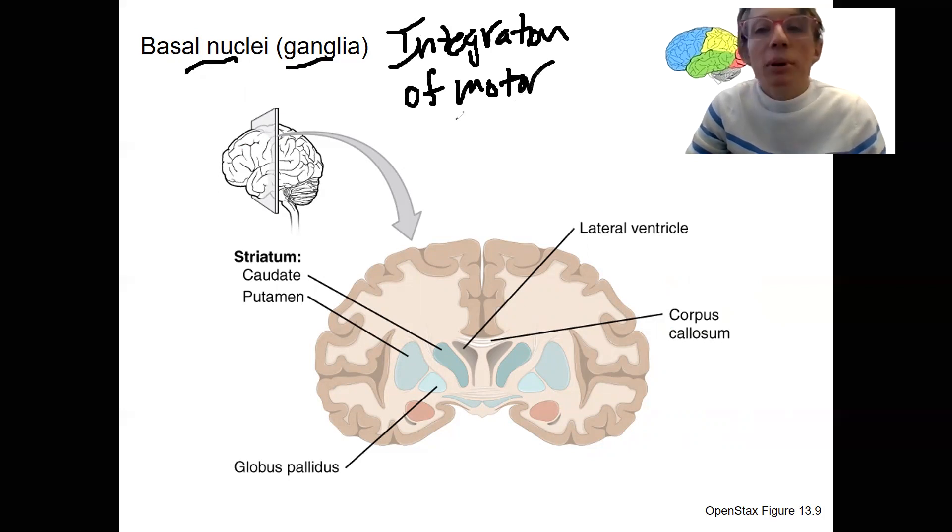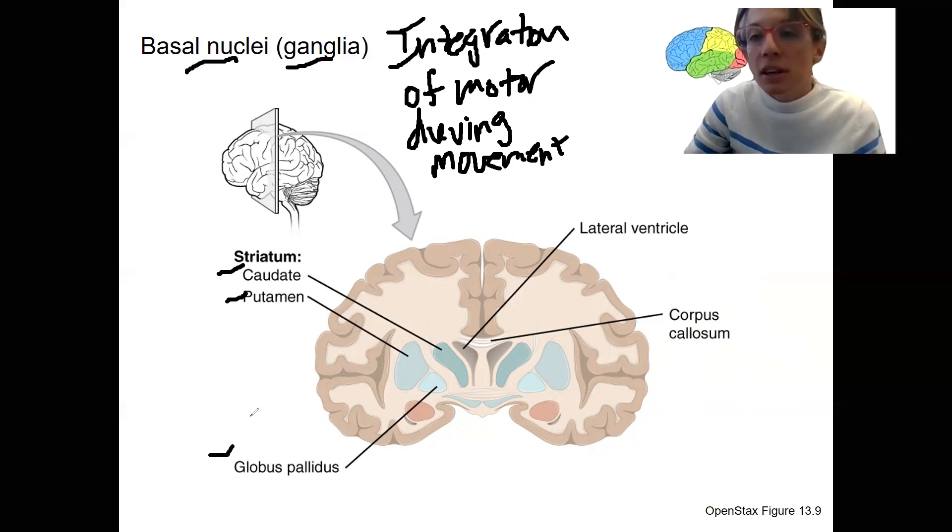These regions are involved in integration of motor activity, and this is typically during ongoing movements. So we'll come back to the control of motor at the end of this week and see them again there, meaning this group of nuclei that make up the basal nuclei. There are three different nuclei, the caudate, putamen, and globus pallidus. You'll see some of these in lab. We'll look at the sheep brain.